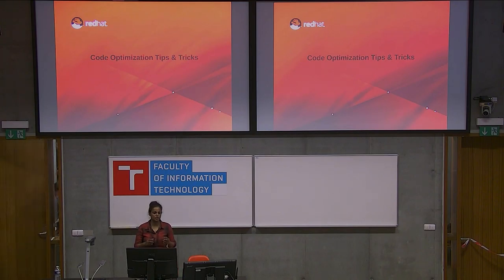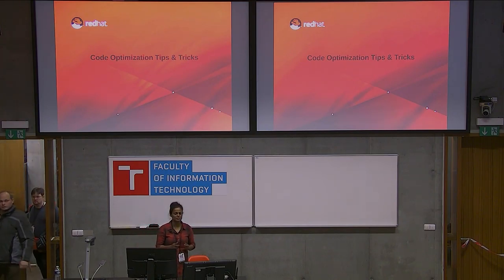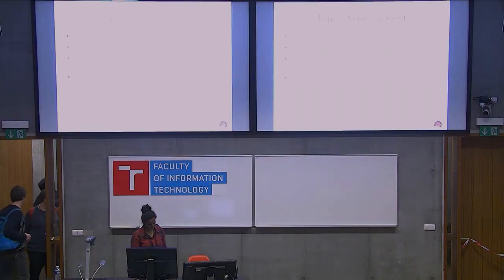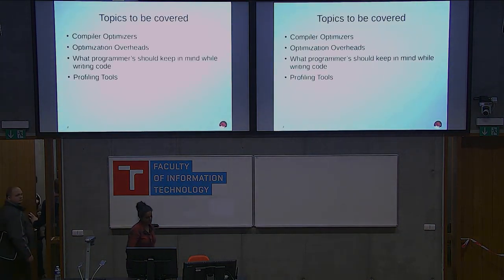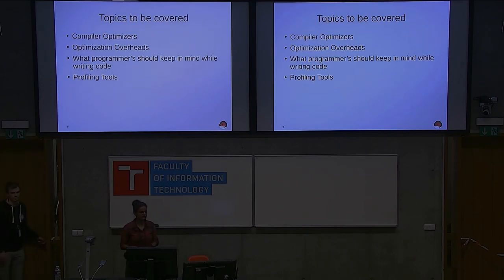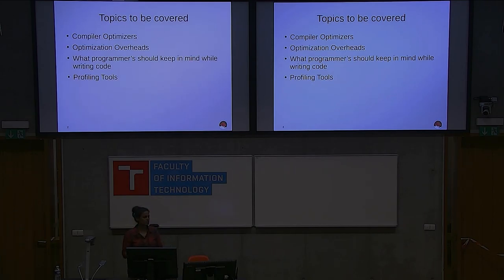We are always looking for better performance, and when it comes to performance, we are always trying to have the best optimization possible at the software level. So how can we do that? We'll look at compiler optimizers, the overhead of optimizations, what we should keep in mind when writing code to get better performance, and some profiling tools to measure the performance of the application.